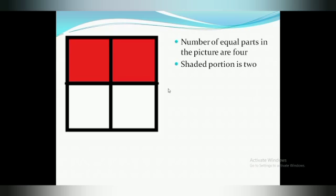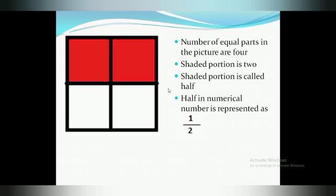Here the window has four equal parts and two parts are shaded. The shaded portion is called a half. Half, in numerical form, is represented as one upon two.